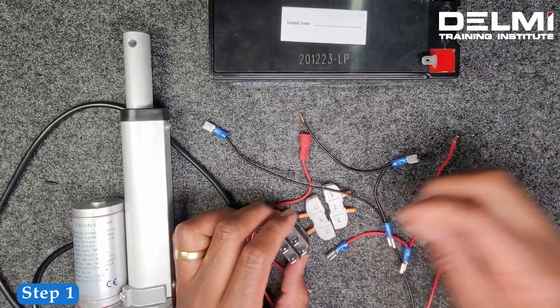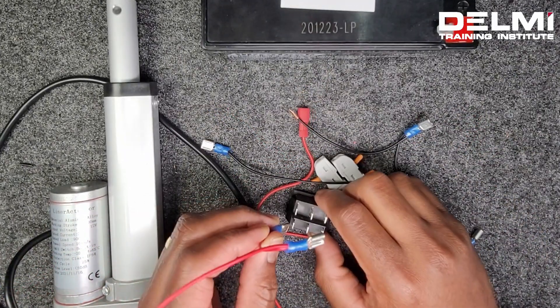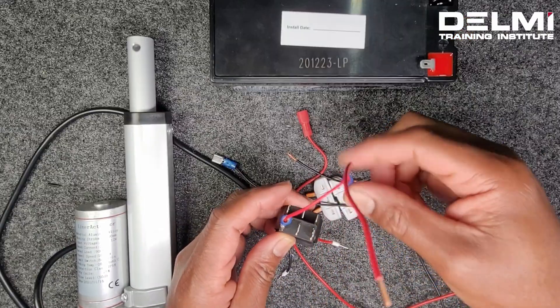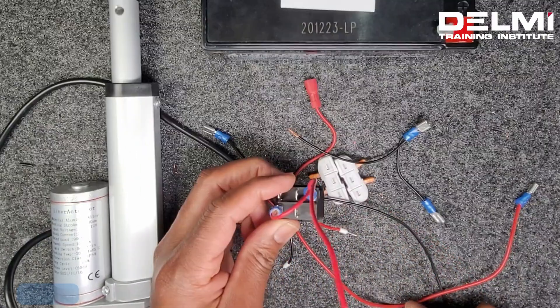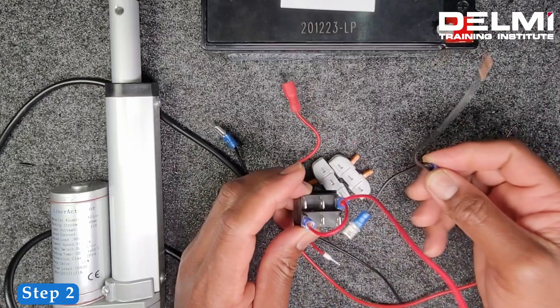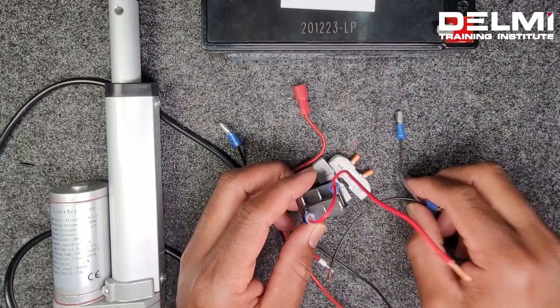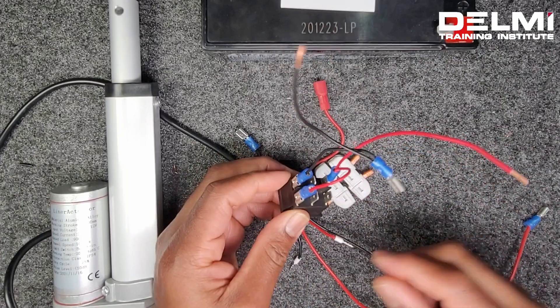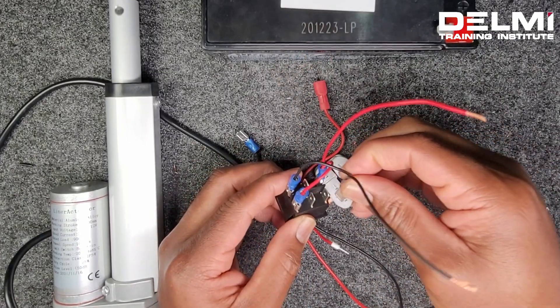So step one, grab one, connect the farthest end to the opposite farthest end. Step two, take the other connector, connect the farthest end and connect this other opposite end.